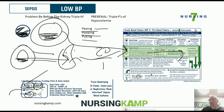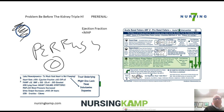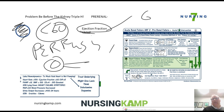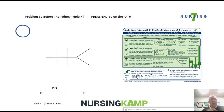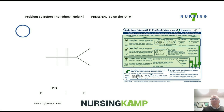The last pre-renal cause is CHF. CHF patients are not in a low volume state, but rather have a perfusion problem — they're unable to fully perfuse the kidney. We can tell by a low ejection fraction, less than 60%, or a mean arterial pressure less than 60. The Triple H of pre-renal problems is hemorrhage, hypovolemia, and heart failure. The first sign is decreased urinary output. With pre-renal concerns, the problem is outside the kidney — either low volume or hypoperfusion.